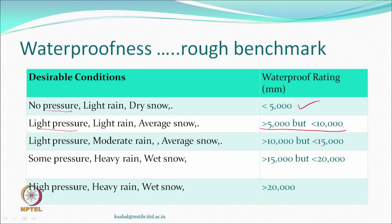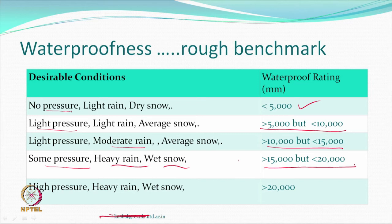If you have moderate rain with light pressure, you may require a little more. For heavy rain or wet snow, you will be in the range of 15,000 to 20,000. For very heavy rain or very wet snow at very high pressure, you expect even higher ratings. You can appreciate this is highly closed material - it resists so much that it does not breathe; air cannot pass through and water vapor also cannot pass through.